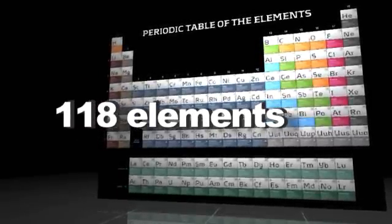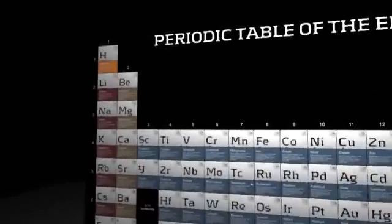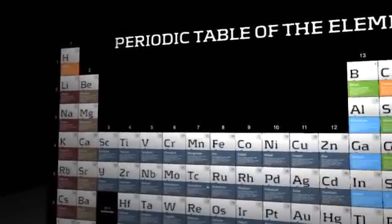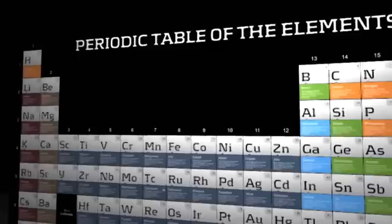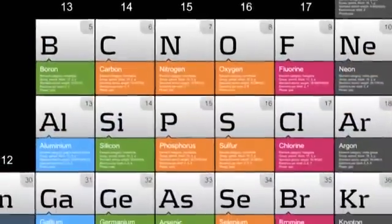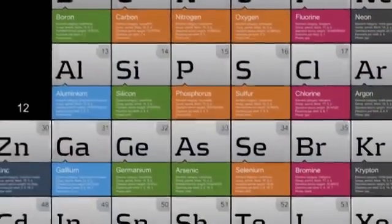Elements are substances made up of a single kind of atom. Nothing smaller than an atom or made up of more than one element appears on the table. To understand how elements are arranged on the table, we need to review atomic structure.